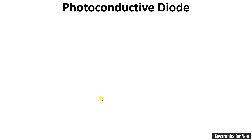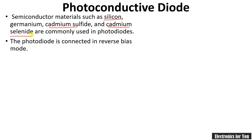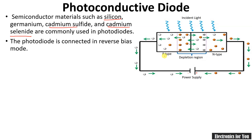Semiconductor materials such as silicon, germanium, cadmium sulfide, and cadmium selenide are commonly used in photodiodes. The photodiode generally operates in reverse bias. Here we can see a p-n junction diode with a p-type region, an n-type region, and a depletion region.